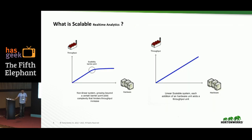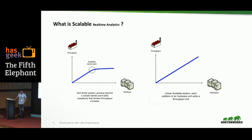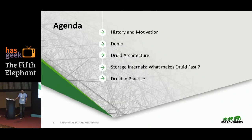The third thing is scalability. Here I'm showing a small picture where the x-axis denotes the amount of hardware and the y-axis denotes the throughput. In the first system, as you add more hardware, throughput increases up to a point but then levels off — that system is not scalable. On the other hand, a system where adding more nodes gives proportionally higher throughput — that's a scalable system. So I'll be discussing how you can do scalable real-time analytics using Druid.